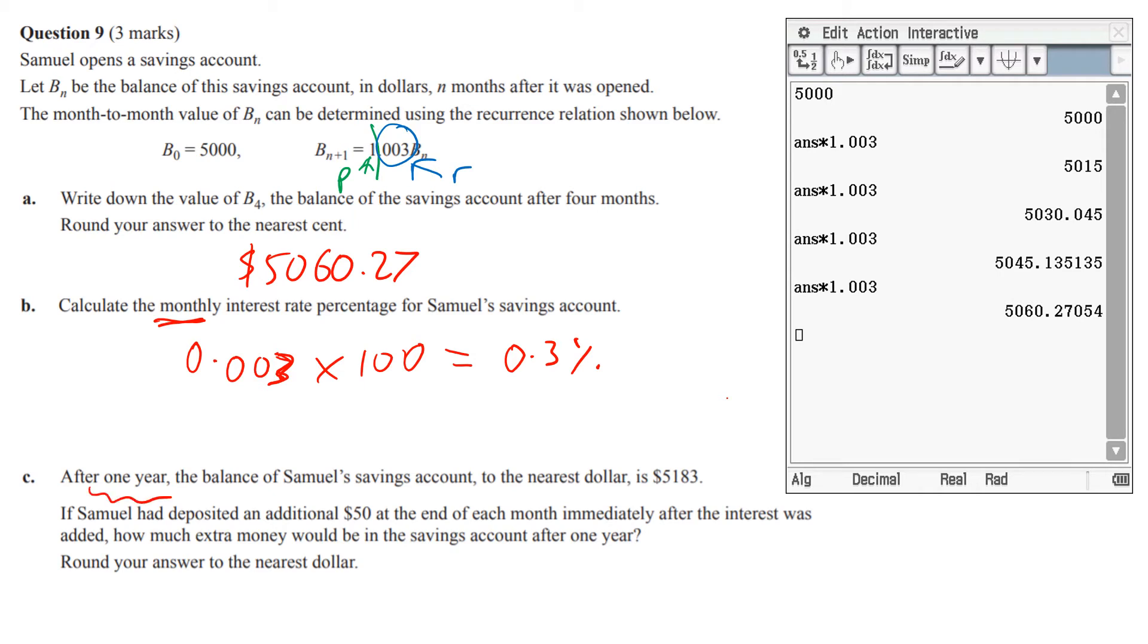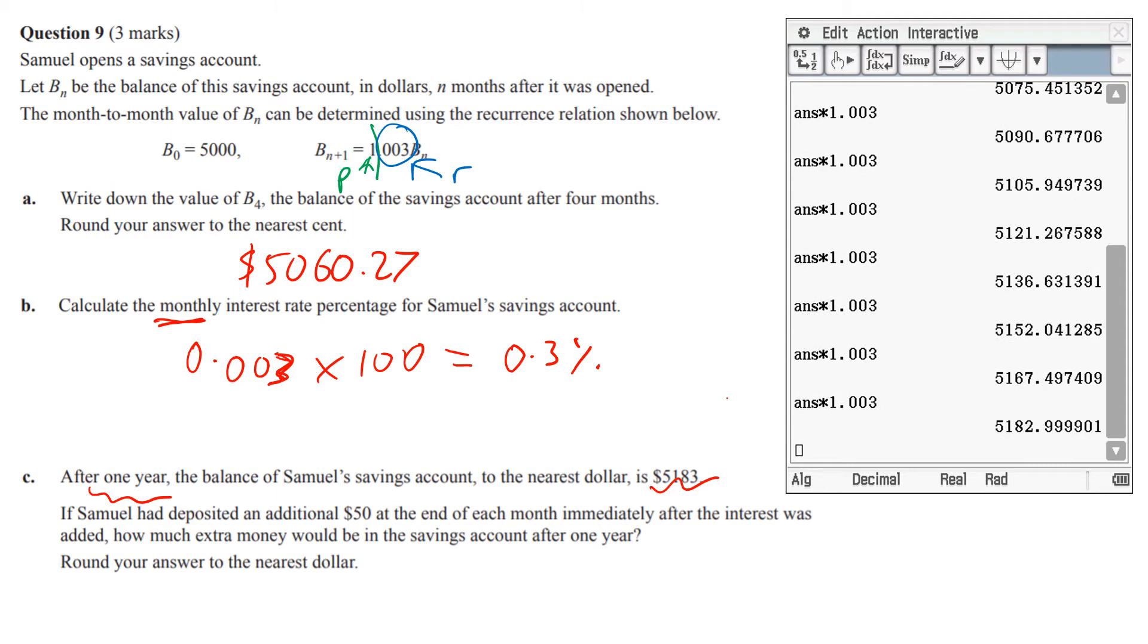Now it says after one year the balance on his account was $5183. Interestingly enough, if you just keep tapping when you calculate until you do 12 times, you do get that number - look there it is right there for you. You could have done that, or you can remember, make a rule and just do to the power 12 and you still get the same number. But they gave that number to you, I just want to show you how you can do that on your calculator. So this number is important. What they're saying now is if Samuel had deposited $50 at the end of each month, so now your recurrence relationship - let me just erase this messy bit up here - is saying this plus 50 is now your new recurrence relationship.